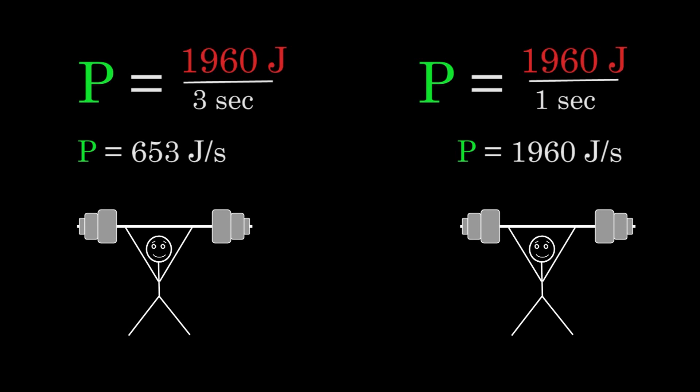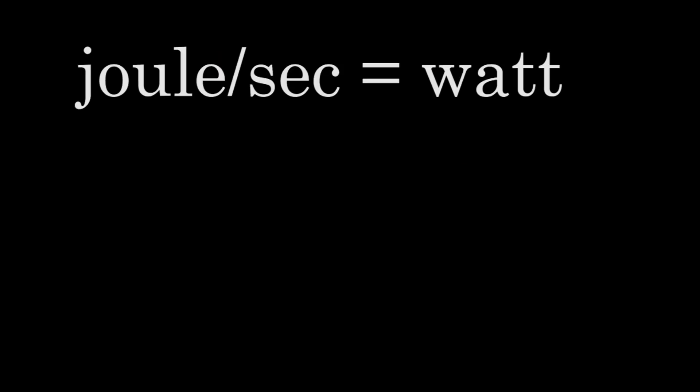And the power output of the weightlifter on the left during his lift is 653 joules per second. A joule per second is named a watt, after the Scottish engineer James Watt. And the watt is abbreviated with a capital W.